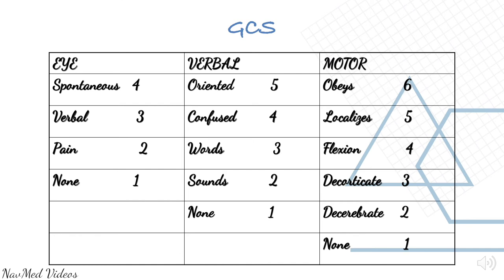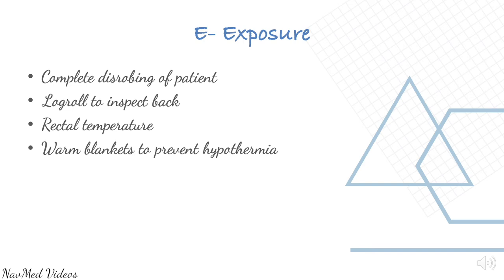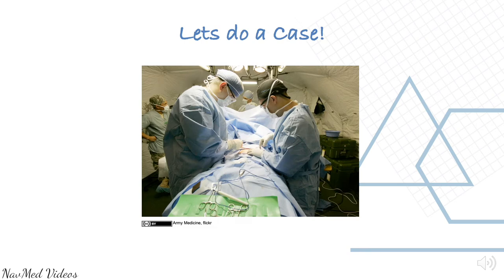Interventions for disability: for spinal cord injury, keep the spine stable. High dose steroids may be used. Decreasing mental status may be a sign of elevated intracranial pressure — sit the patient up and use hyperventilation by increasing breathing and oxygen. E for exposure: completely disrobe the patient, log roll to inspect the back, take a rectal temperature, and apply warm blankets to prevent hypothermia. Always inspect the back.